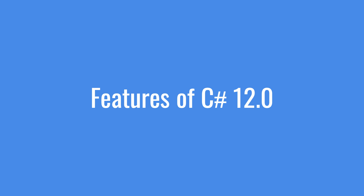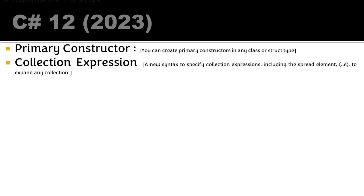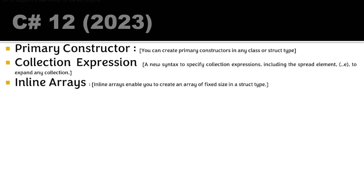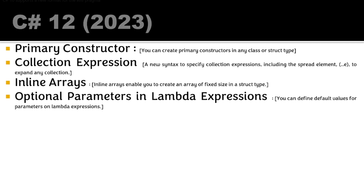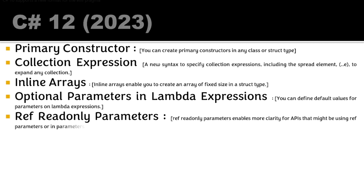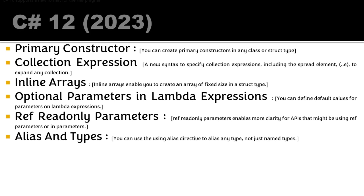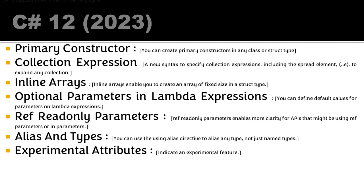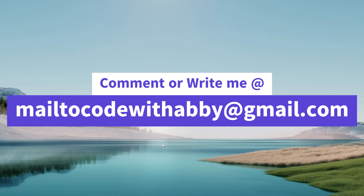C# 12.0 is the current version, released in 2023. Primary constructors allow you to create a primary constructor in any class or struct type. Collection expressions provide new syntax including the spread element to expand any collection inline. Inline arrays enable creating fixed-size arrays in a struct type. Optional parameters in lambda expressions allow defining default values for parameters. Ref readonly parameters add clarity to APIs using ref parameters. Alias directives can now alias any type, not just named types. The experimental attribute marks experimental features.